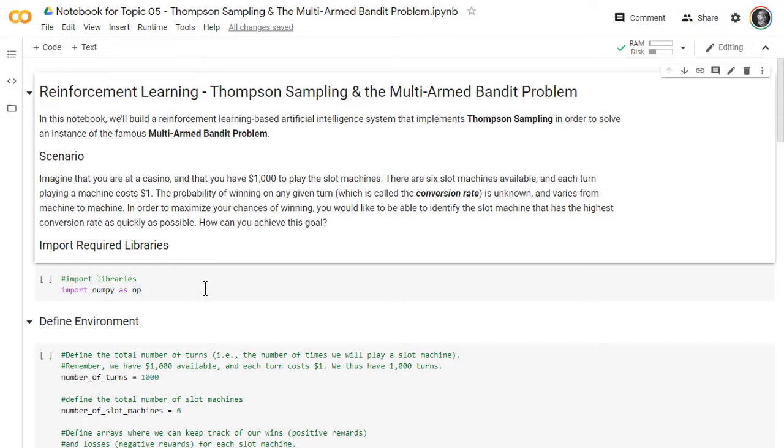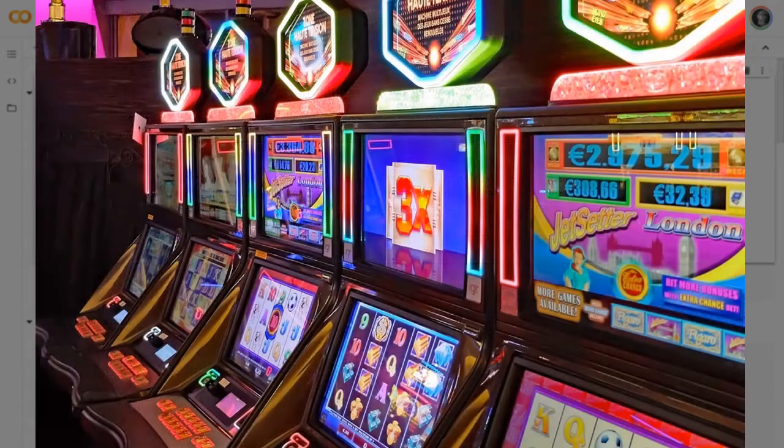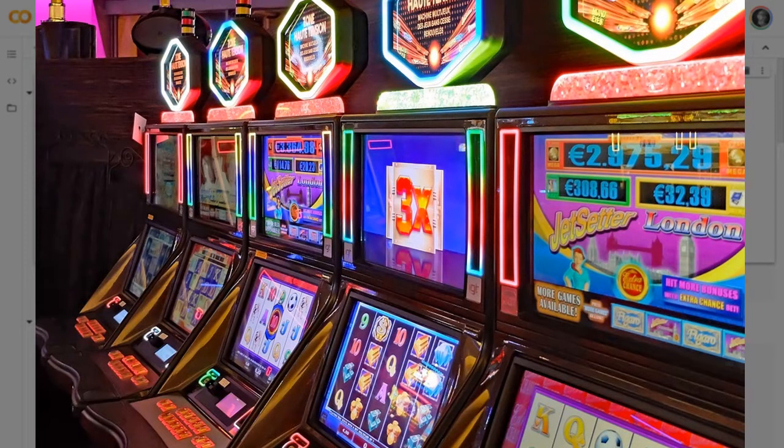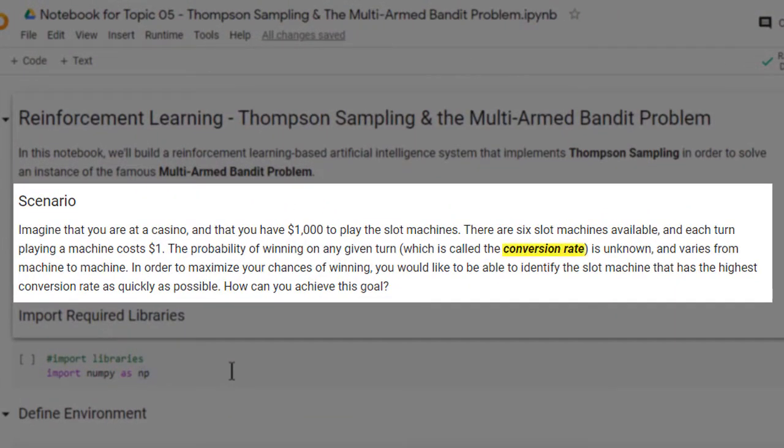To begin, we'll briefly review our scenario. Imagine that you are at a casino and that you have $1,000 to play the slot machines. There are 6 slot machines available, and each turn playing a machine costs $1. The probability of winning on any given turn, which is called the conversion rate, is unknown and varies from machine to machine. In order to maximize your chances of winning, you would like to identify the slot machine that has the highest conversion rate as quickly as possible. In this notebook, we'll implement a Thompson sampling based AI system to help us achieve this goal.